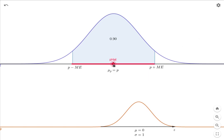Now if we subtracted ME from p hat and added ME to p hat, then 90% of the time p hat will be between here and here, and notice that that interval that we've built, that is p hat minus ME and p hat plus ME, 90% of the time that interval is going to include this mean of the population.